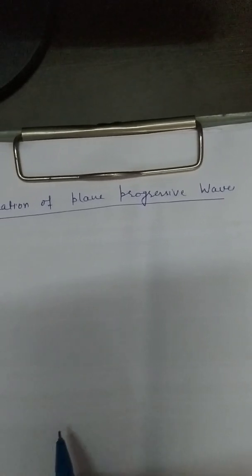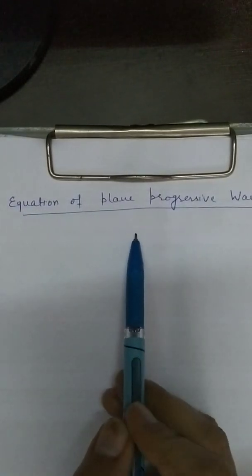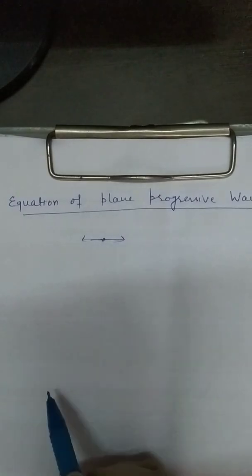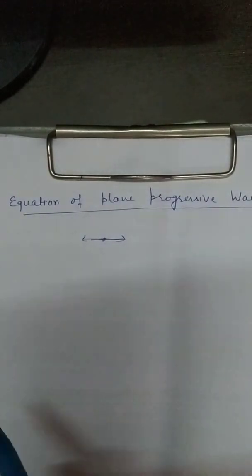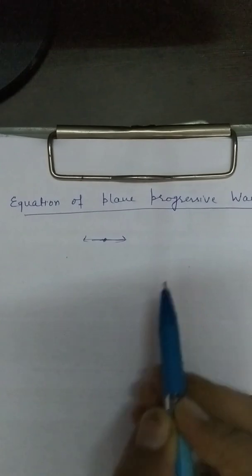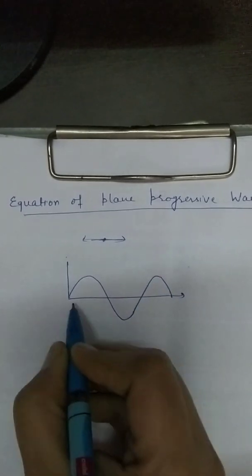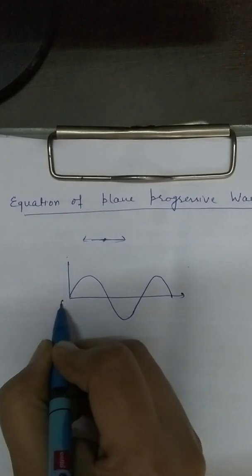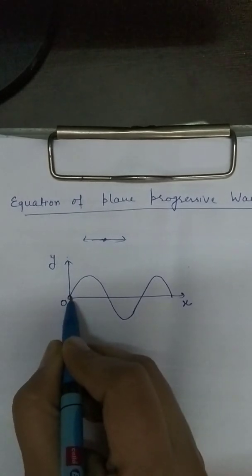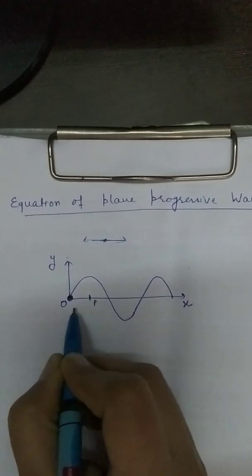Good morning students. Today we are going to start with the equation of a plane progressive wave. Up to now, in the previous chapter, we discussed that when a particle is vibrating about its mean point, it is represented by y = r sin(ωt). In this wave, the particle vibrates about its mean point and the disturbance travels from one point to another point of the medium.